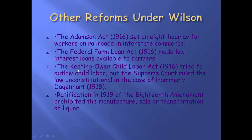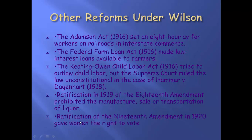What else happened under Wilson? The 18th Amendment was ratified in 1919 — that is the prohibition amendment. It said you can't make it, you can't sell it, you can't transport it, you can't drink it, you can't have it — liquor is illegal. And then the other great stride for women would be the 19th Amendment in 1920, which actually gave women the right to vote.